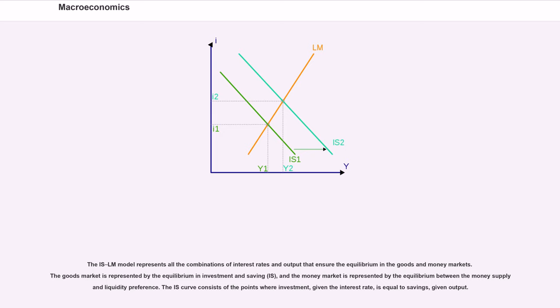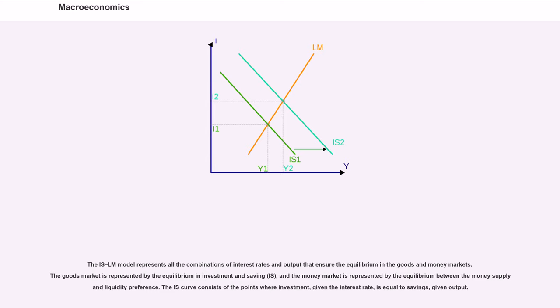The IS curve consists of the points where investment, given the interest rate, is equal to savings, given output. The IS curve is downward sloping because output and interest rate have an inverse relationship in the goods market. As output increases, more money is saved, which means interest rates must be lower to spur enough investment to match savings.